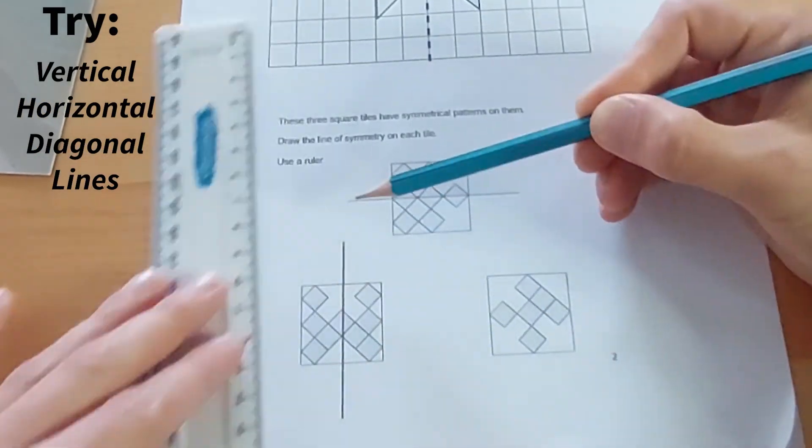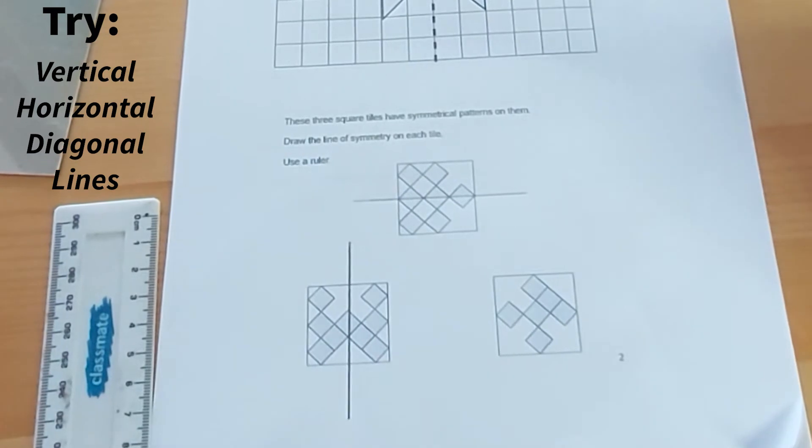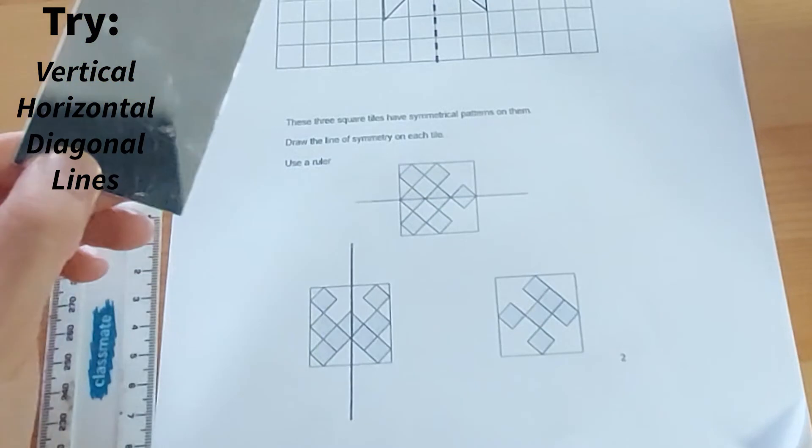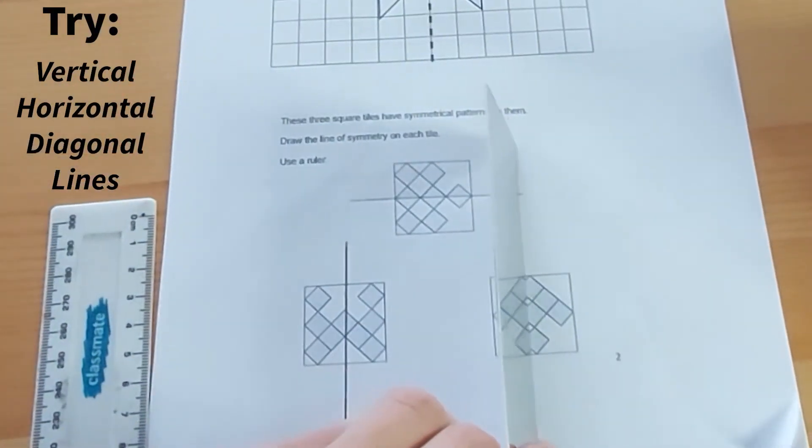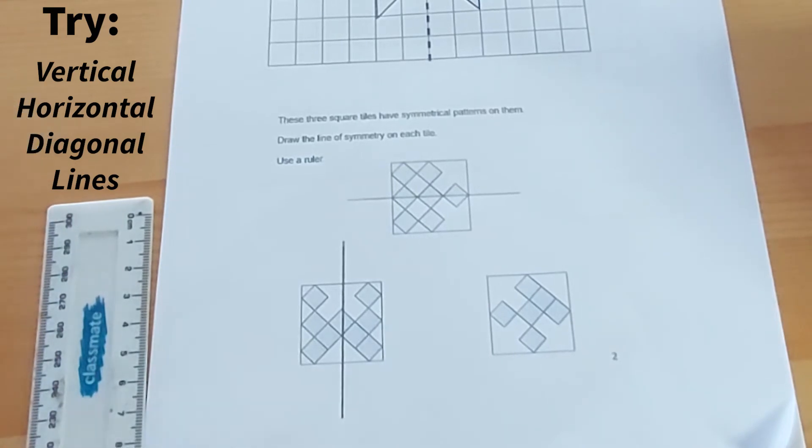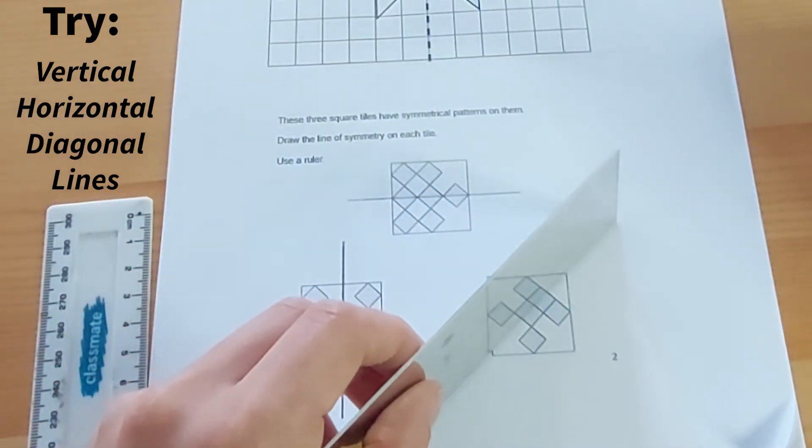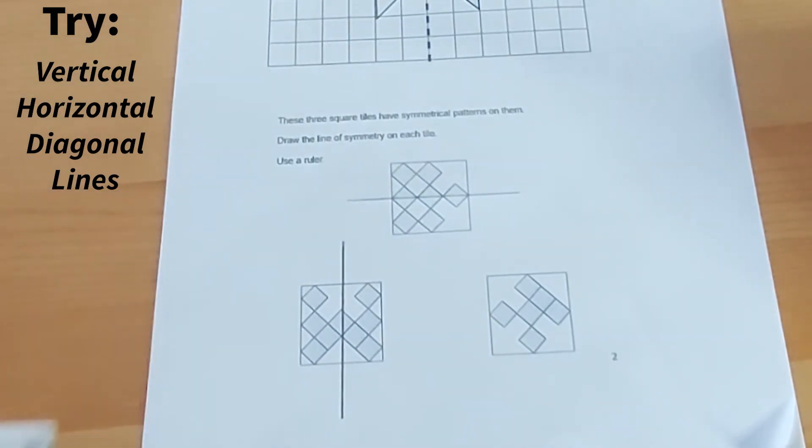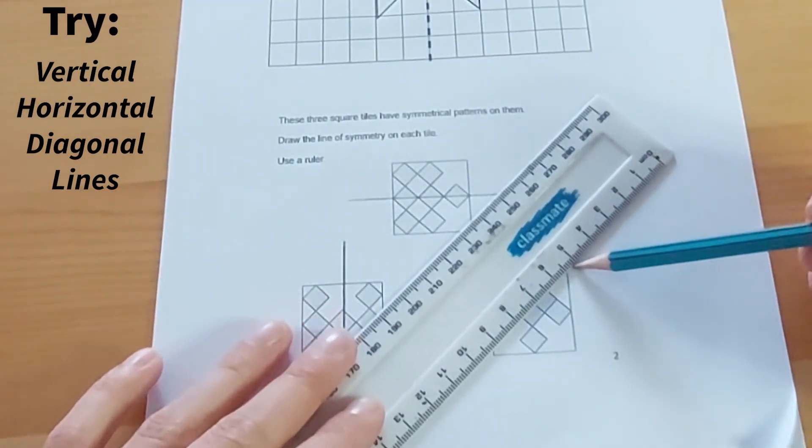Because along that line, that side is exactly the same to that side. And finally this one. Horizontal? No. Vertical? No. So I'm going to try diagonal. Is that the same as that? Yes, it is. So my third line of symmetry is a diagonal line.